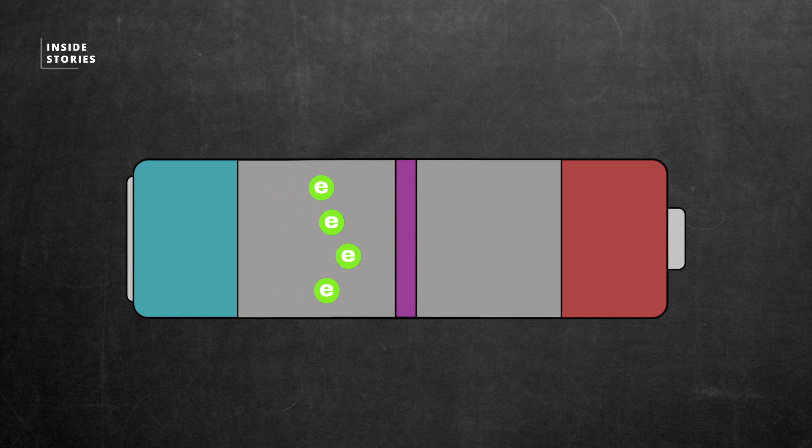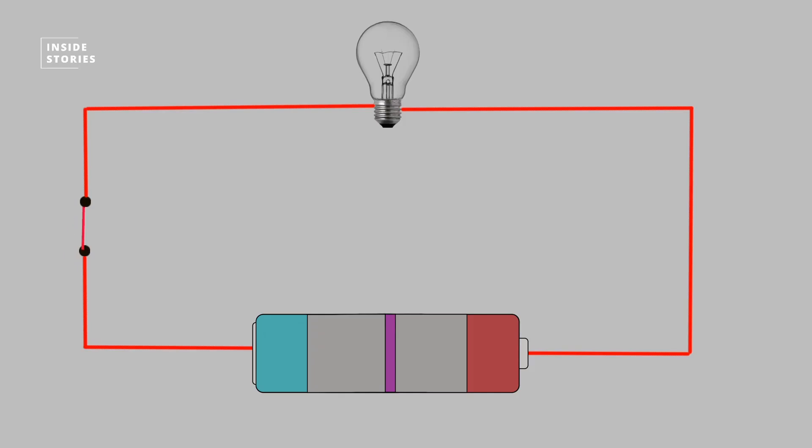However, the separator blocks the flow of electrons inside the battery. The circuit needs to be closed in order to get the electrons to the cathode, using a conductive path between the anode and cathode, generating the flow of electrons from one side to the other. A battery therefore only has a limited amount of energy available.